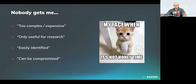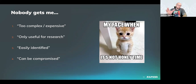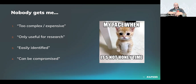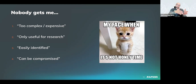'Easily identified' — that can be very true, but by the point that an attacker has interacted with and fingerprinted the honey thing, it really doesn't matter. An alert should have been generated and someone should be investigating. Finally, 'honey pots can be compromised' — this is more common with higher-interaction honey things, because as you increase interactivity the attack surface grows. But even if it becomes compromised, the main goal of alerting will have occurred and the incident response process will be underway.